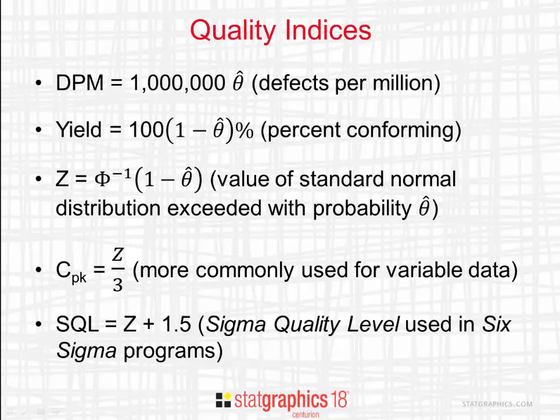One last useful quality index is something called the sigma quality level. You get SQL by taking Z and adding 1.5. This is a widely used index in six sigma programs. Processes that are operating at a sigma quality level of 6 or greater are said to possess world class quality.